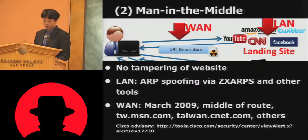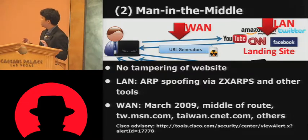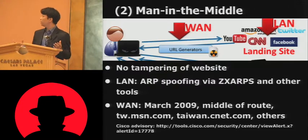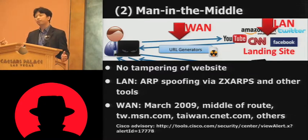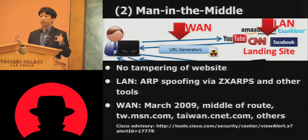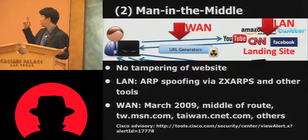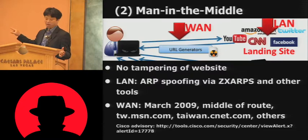There are two other types of attacks that inject scripts, seen a lot in Asia, and they require no tampering of websites. When it happens on the LAN, we typically see ARP spoofing using a tool like ZXARPS. This tool makes itself man-in-the-middle in your LAN using ARP spoofing. So when people tell you your website is serving malicious scripts, you go in and check all the content and there's no malicious script — because they haven't changed your website, but they've compromised your LAN.